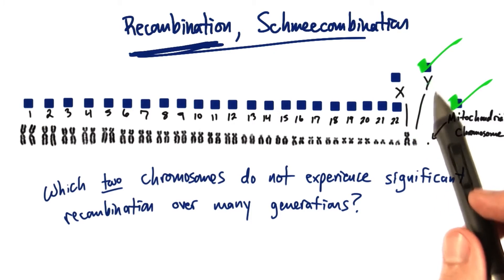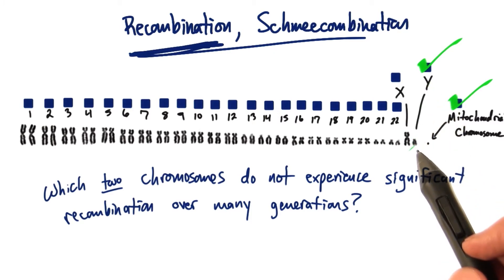So over many generations, the Y chromosome is left largely intact.